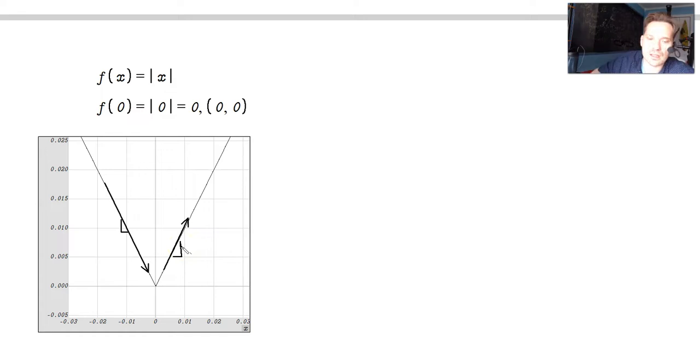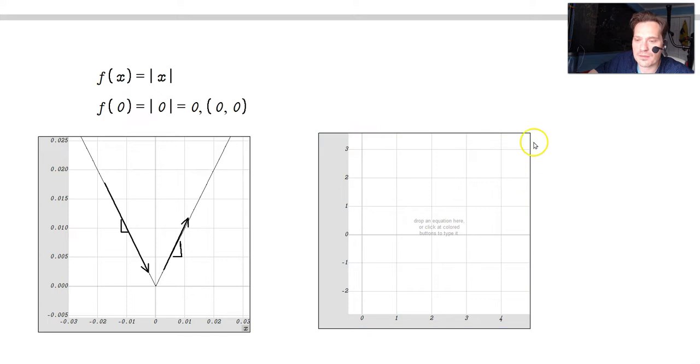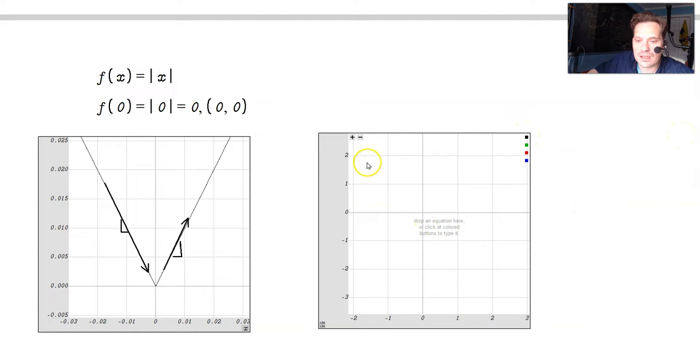So that means when you graph f prime, something has to happen. It has to show that somehow. So the way to do that is as follows. Well, let me zoom in. So you got to zoom in again. Let's do that now.